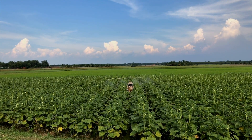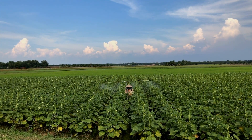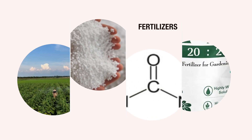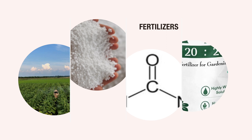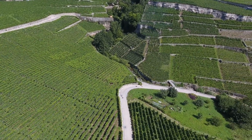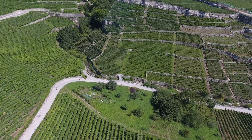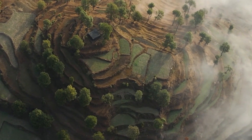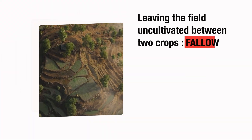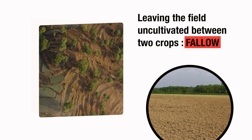Fertilizers, on the other hand, are chemicals rich in a particular nutrient and are produced in factories. Some examples are urea, ammonium sulfate, superphosphate, potash and NPK. The use of fertilizers has helped farmers get better yields of crops such as wheat, paddy and maize. However, excessive use of fertilizers has made the soil less fertile and has become a source of water pollution. Therefore, to maintain soil fertility, we should substitute fertilizers with organic manure or leave the field uncultivated between two crops — this is called fallowing.